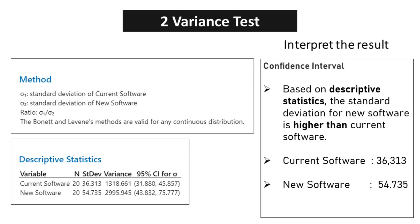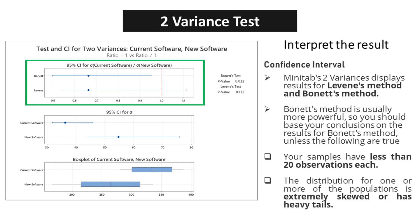Based on descriptive statistics, the standard deviation for new software is higher than current software. The mean for current software is 36.313 while new software is 54.735. Minitab's two variances displays results for Levene's method and Bonnet's method. Bonnet's method is usually more powerful, so you should base your conclusions on the results for Bonnet's method, unless your samples have less than 20 observations each, or the distribution for one or more of the populations is extremely skewed or has heavy tails.